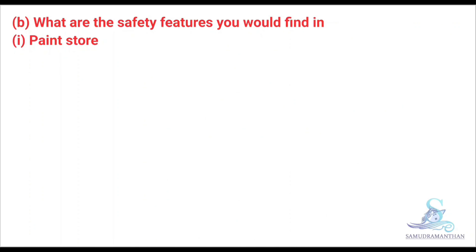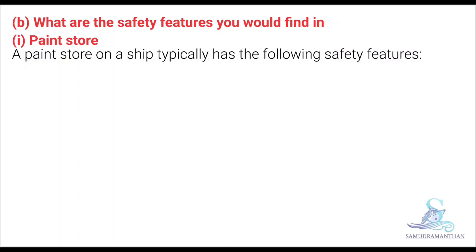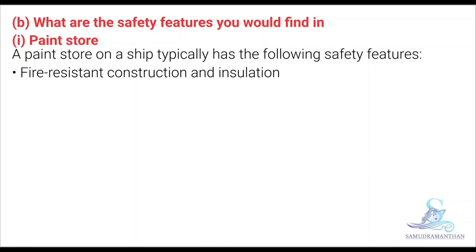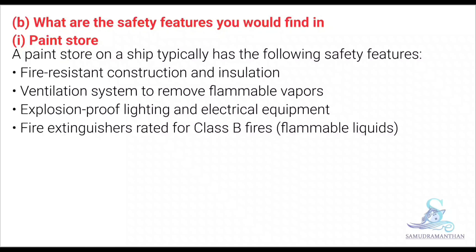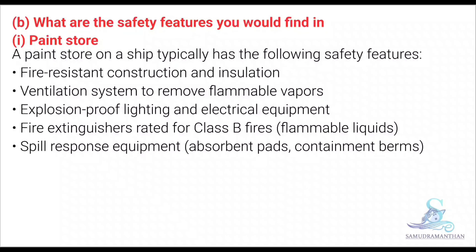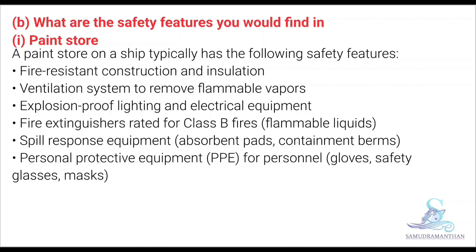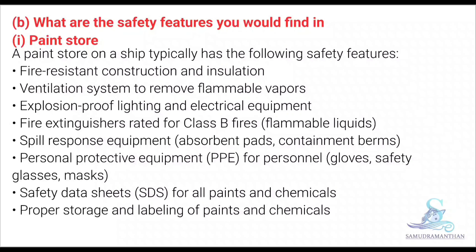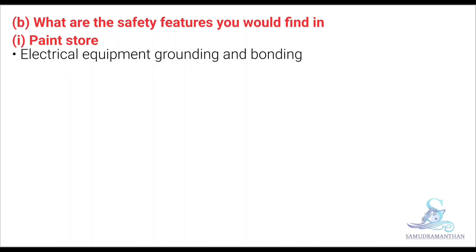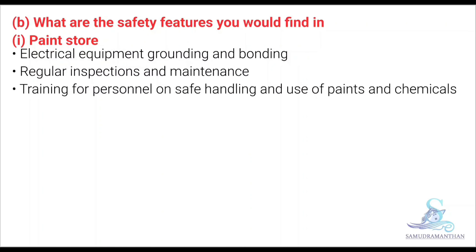Now we will move to the second part of the question: what are the safety features you would find in a paint store? A paint store on a ship typically has the following safety features: fire-resistant construction and insulation; ventilation system to remove flammable vapours; explosion-proof lighting and electrical equipment; fire extinguisher rated for class B fires (flammable liquids); spill response equipment including absorbent pads; personal protective equipment such as gloves, safety glasses, and mask; safety data sheets for all paints and chemicals; proper storage and labelling of paints and chemicals; electrical equipment grounding and bonding; regular inspection and maintenance; and training for personnel on safe handling and use of paints and chemicals.